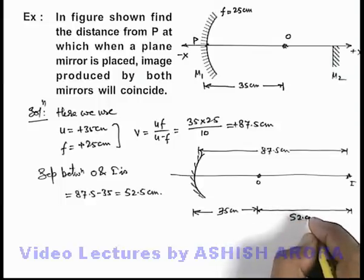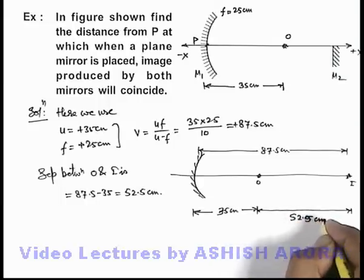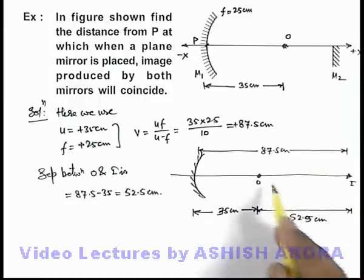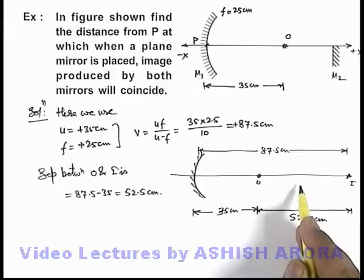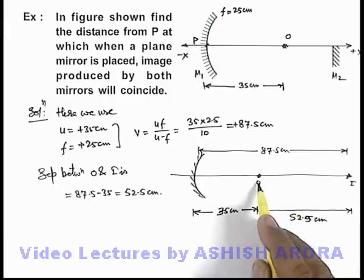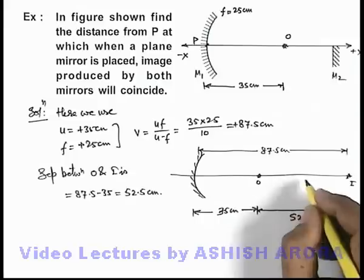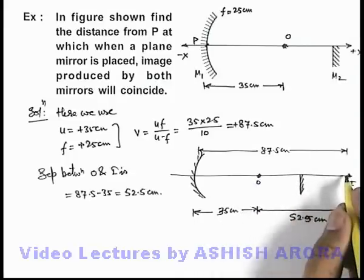So in this situation, as image is produced at a distance 52.5 centimeters from object, we wish to place a plane mirror M2 somewhere here so that in the plane mirror also, for this object, image produced will be coinciding with this image. And we need to place the mirror M2 exactly midway between this object and image.